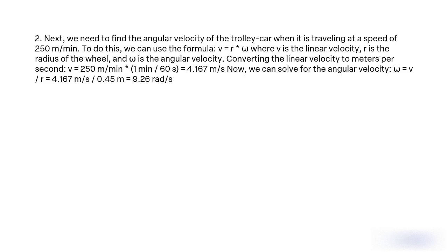Next, we need to find the angular velocity of the trolley car when it is travelling at a speed of 250 m/min. To do this, we use the formula v = r × ω, where v is the linear velocity, r is the radius of the wheel, and ω is the angular velocity. Converting the linear velocity to meters per second: v = 240 m/min × (1/60 s) = 4.167 m/s. Now we can solve for the angular velocity: ω = v / r = 4.167 m/s / 0.45 m = 9.26 rad/s.